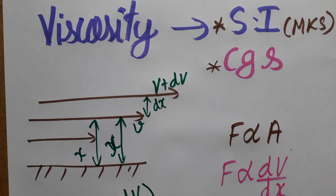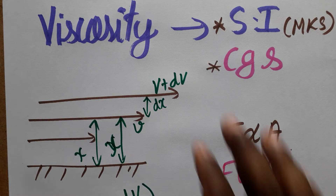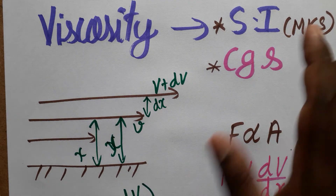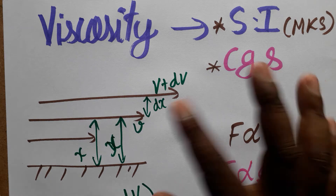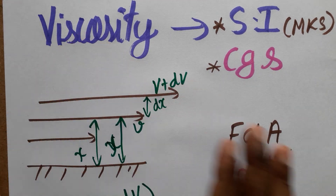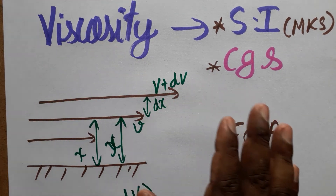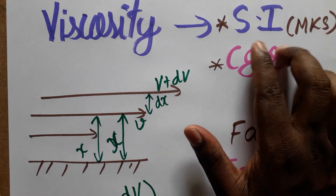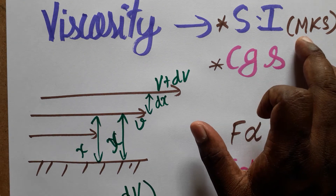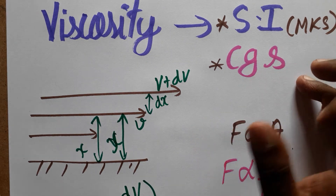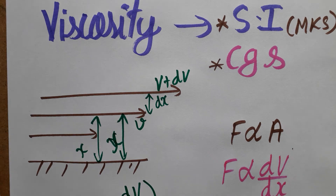Today we are going to see the coefficient of viscosity in SI units and the CGS system. First we will see what is the unit of coefficient of viscosity. The SI system follows meter, kilogram, second; the CGS system follows centimeter, gram, second.